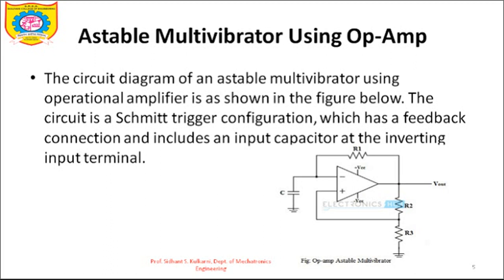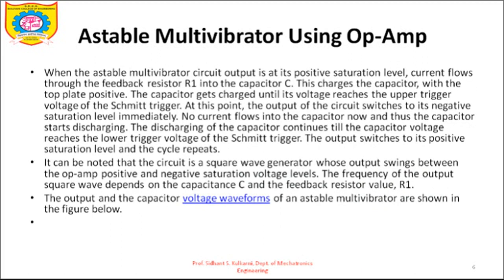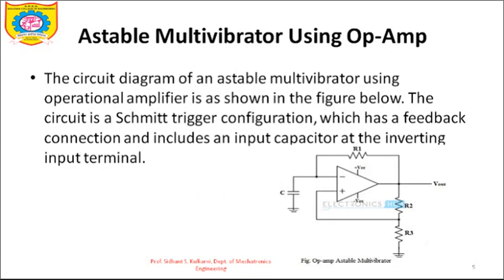In this circuit, the capacitor is connected to the inverting input of the op-amp, and R2 and R3 are connected to the non-inverting terminal. The reference voltage at the non-inverting input terminal is R3 divided by (R2 plus R3). Resistor R1 is used to charge the capacitor through the output voltage. Assuming the op-amp is initially positively saturated, the output voltage is V-sat, and the capacitor will charge to the positive saturation level through resistor R1.